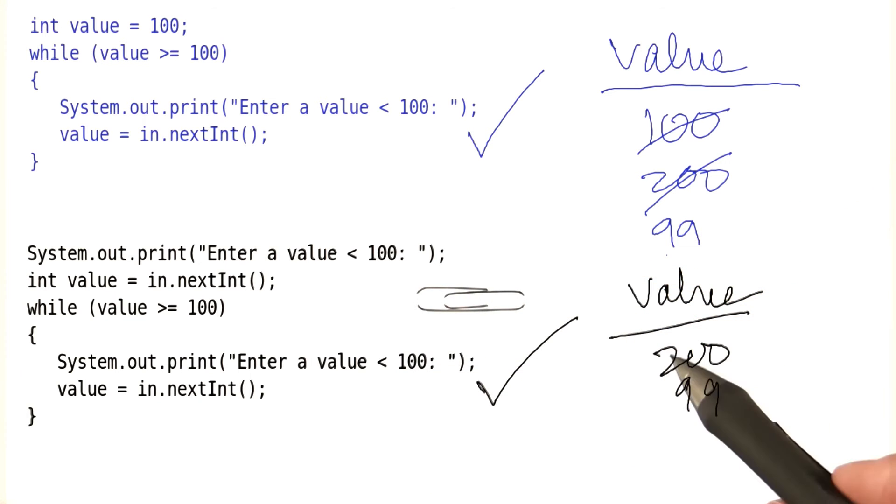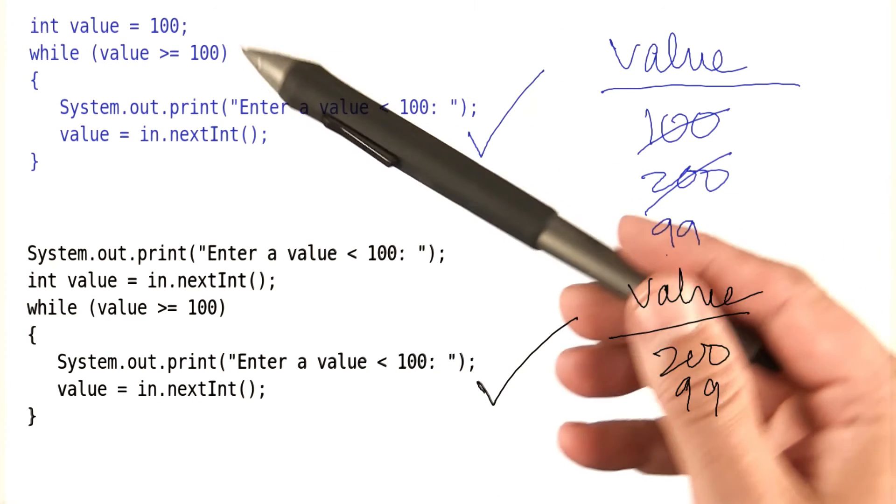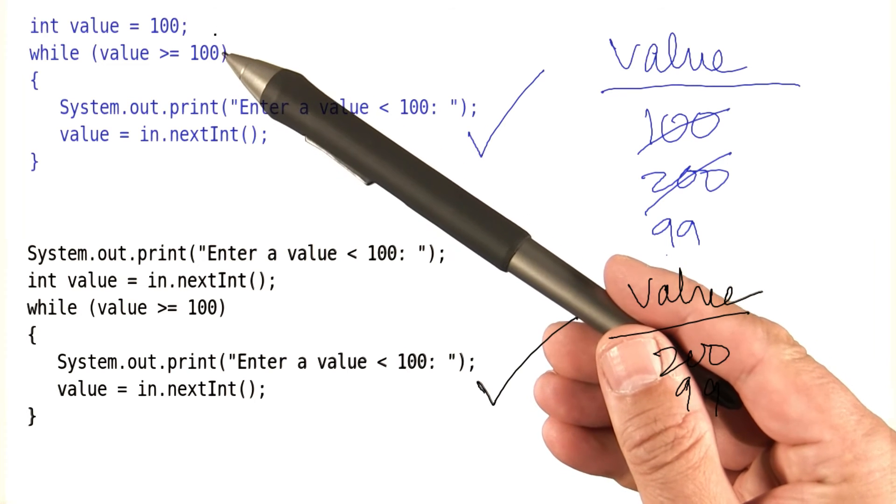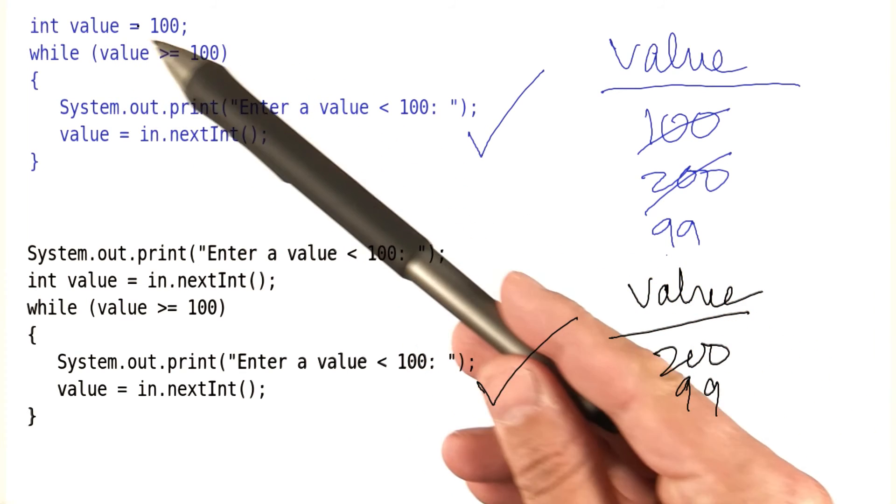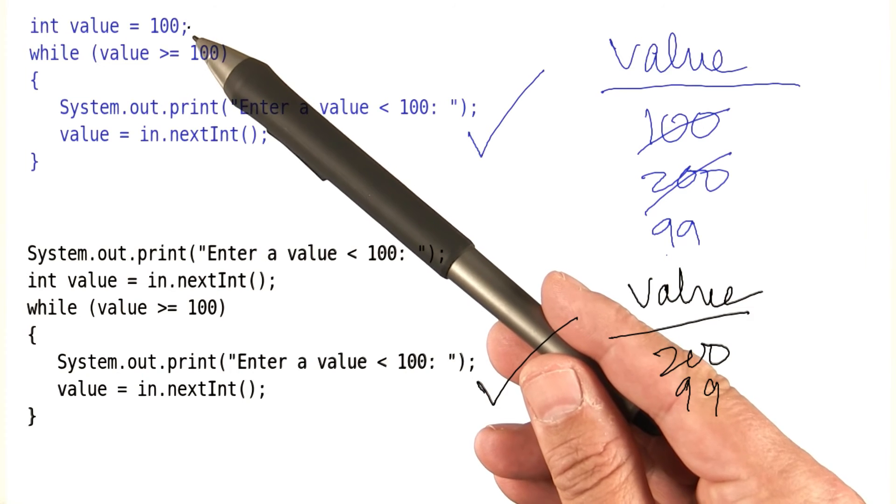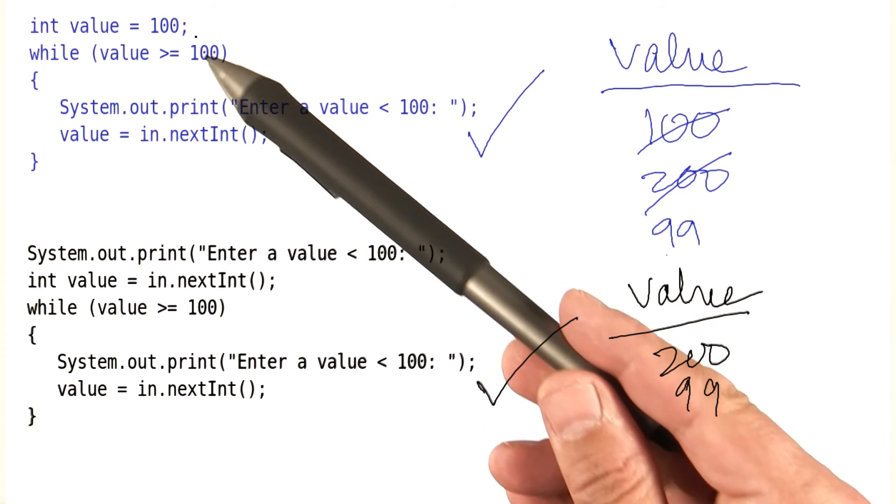But both of the solutions are a little unsatisfactory. Look at the first one here. We have this trick where we're setting this value to an artificial value, not to a user input, so that we enter the loop the first time. It's a bit ugly.